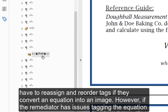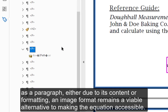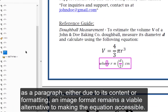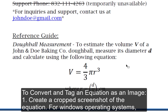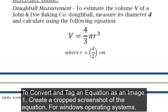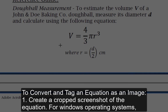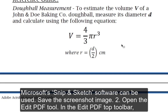However, if the remediator has issues tagging the equation as a paragraph, either due to its content or formatting, an image format remains a viable alternative to making the equation accessible. To convert and tag an equation as an image: Step 1 — Create a cropped screenshot of the equation. For Windows operating systems, Microsoft's Snip and Sketch software can be used. Save the screenshot image.